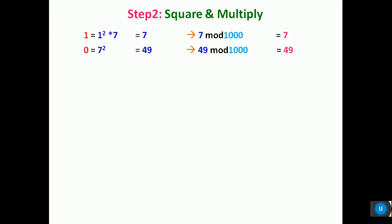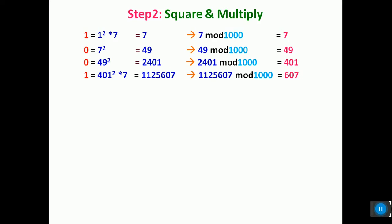The next bit is 0. Since it is 0, you just have to square the previous term under modulo n. 49 squared is 2,401 under modulo 1000, so the remainder is 401. The next bit is 1. Since it is 1, you have to square the previous term and multiply with the base: 401 squared into 7, and under modulo 1000 the remainder is 607.